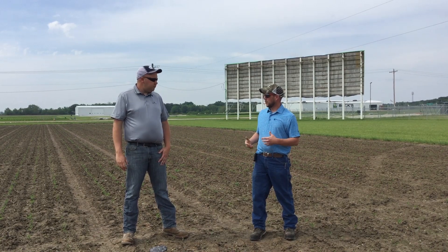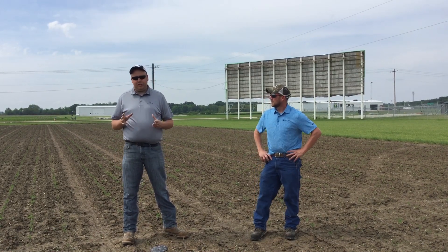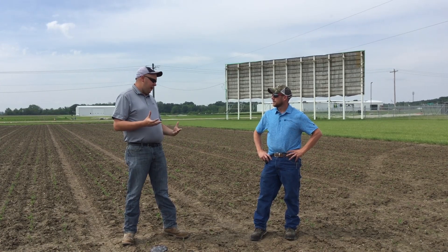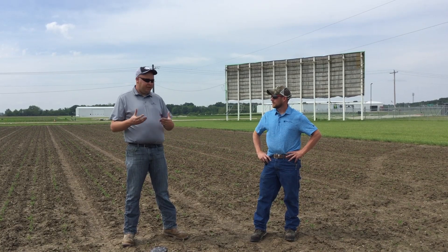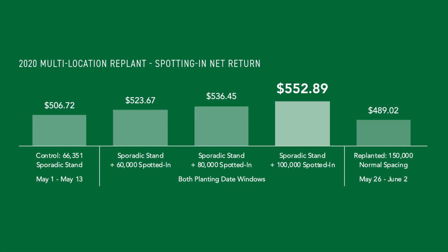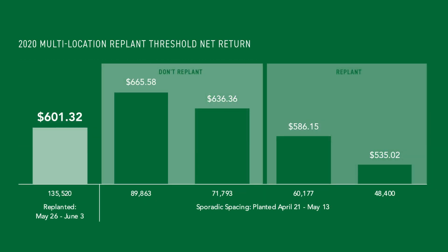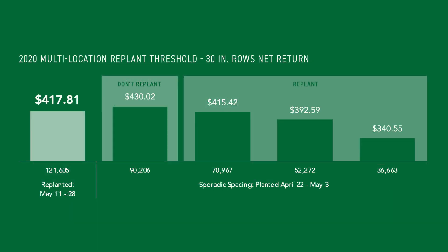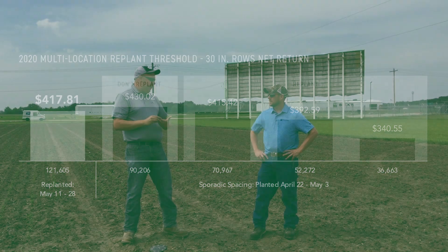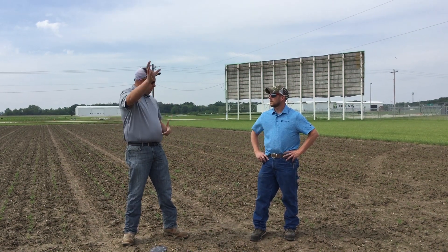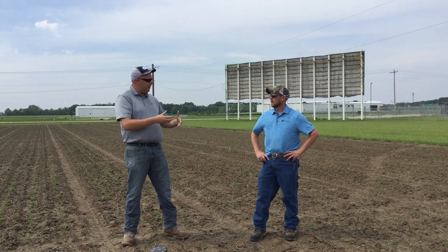Let's review last year's data. What we noticed is if we had a stand, even though it's sporadic, greater than 70,000, we were basically better off to keep that stand compared to coming in later and planting a full 150,000 stand a couple of weeks later — because we know early planting date pays at that point as well. But once we started to get to 60,000, that's where we've seen that we're probably better off to replant. The theory behind this study is to know how low can we go versus across the alleyway there — that's the replant threshold. So now we know how low we can go. What decision should we make? Should we spot in? Should we tear it out and replant?